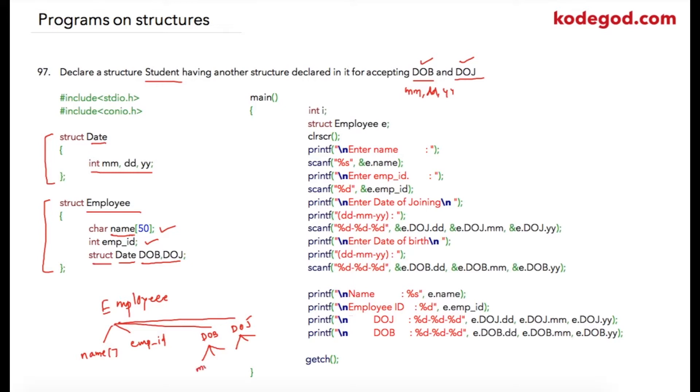And similarly here also mm, dd, yy. To access this variable, suppose we have e as structure variable name for Employee, then we can access this variable as e.DOB.mm, then e.DOB.dd, similarly e.DOB.yy. Same process for DOJ. Let us see what I have written in main. First of all I have created a structure variable e of type Employee.